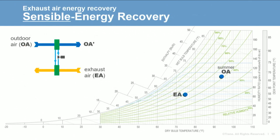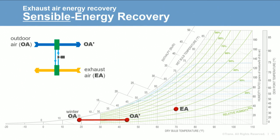The first chart depicts a sensible recovery device used for exhaust air energy recovery, showing operation at cooling design conditions in summer. When it's hot outside, sensible heat is transferred from the outdoor air to the cooler exhaust airstream, lowering the dry bulb temperature of the outdoor air and reducing the load on mechanical cooling equipment. At heating design conditions, the same device transfers sensible heat from the warmer exhaust air to the cold air entering, raising the dry bulb temperature and reducing the heating load.